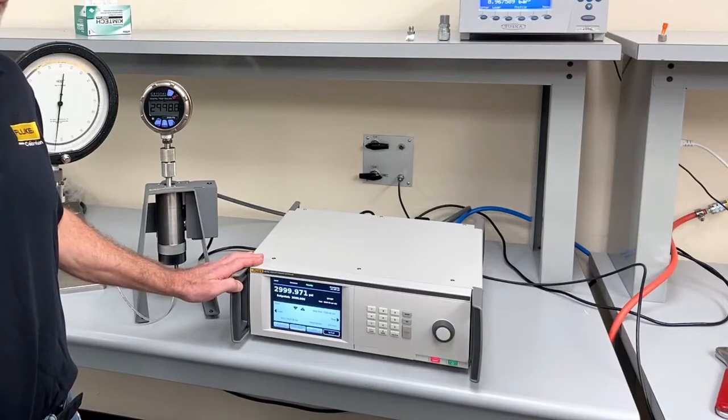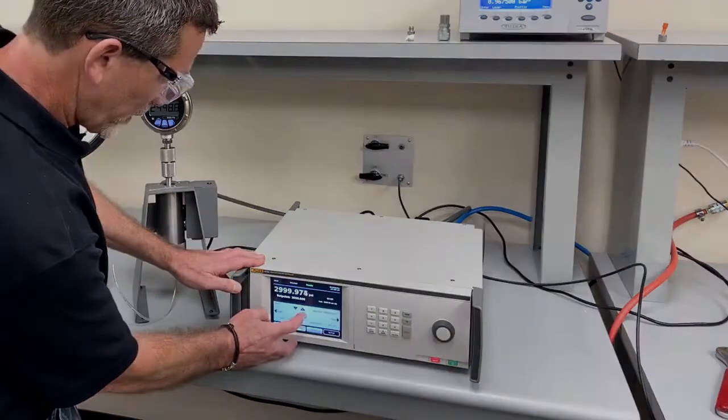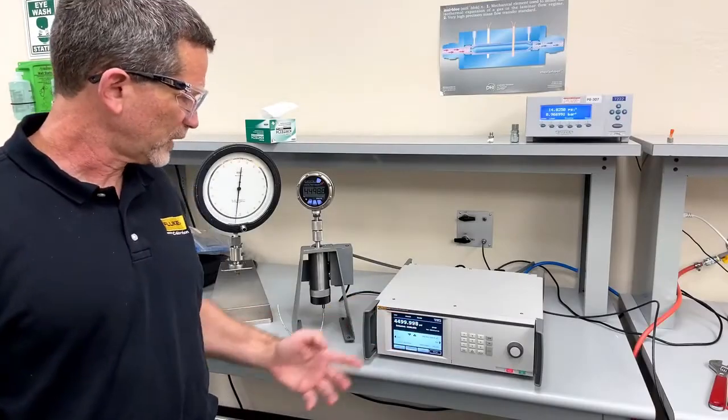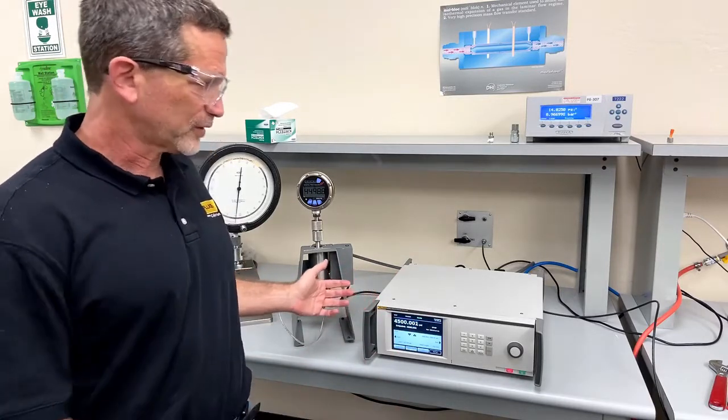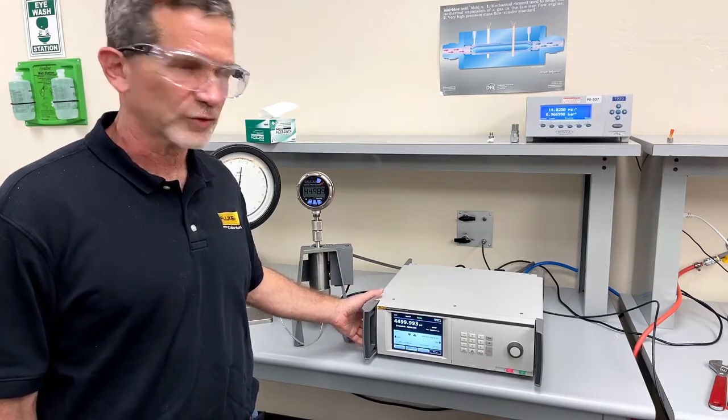Now we want to go to 4,500 PSI. We can simply hit the step button. So we've reached 4,500 PSI. We're controlling very tightly. When the booster is not accelerating, you can hear how quietly the controller controls.